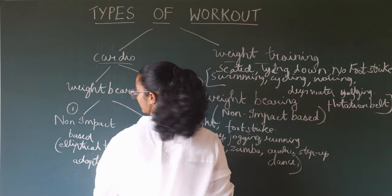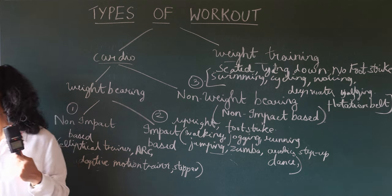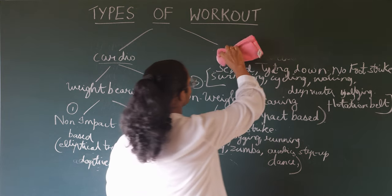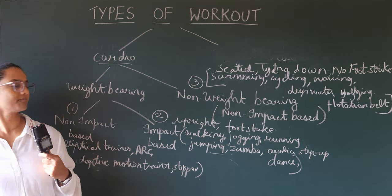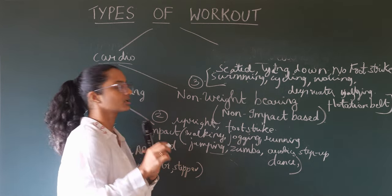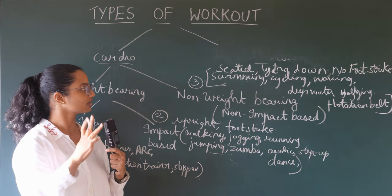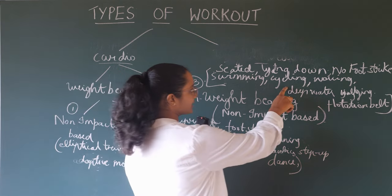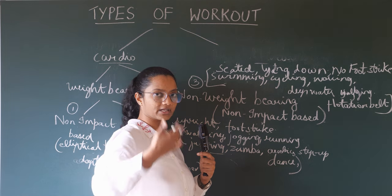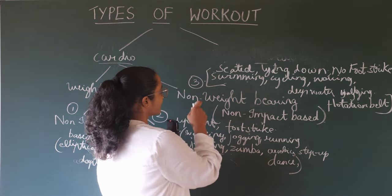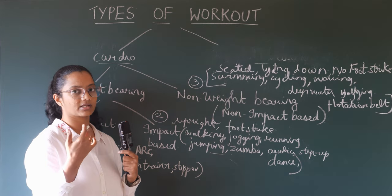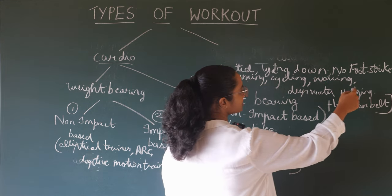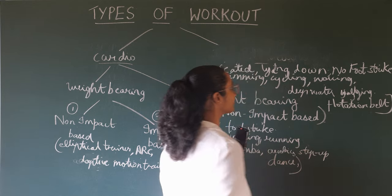You'll see these equipments in the gym. Swimming, there is no foot strike taking place, body is in a lying position. Cycling, body is in seated position, it is non-weight bearing. When you are in standing position it is weight bearing. And rowing, also seated position, and deep water jogging with the flotation belt.